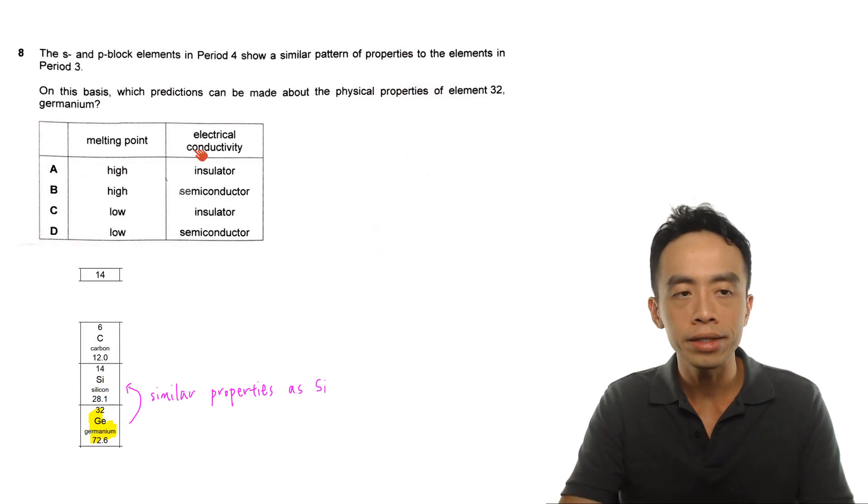Question 8 goes something like this. The S and P block elements in period 4 show a similar pattern of properties to the elements in period 3. So on this basis, which predictions can be made about the physical properties of element 32, germanium?